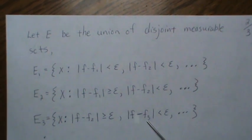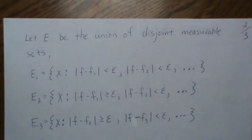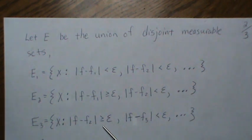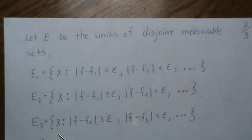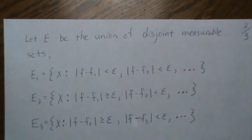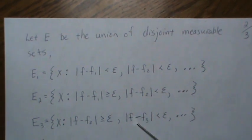Now E_3 means that this is the first one less than epsilon, but the one previous is greater than epsilon. And now the F minus F_1 can be anything in this situation here.